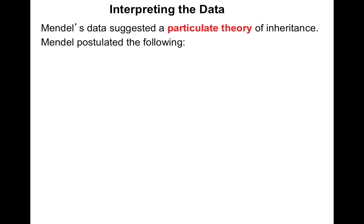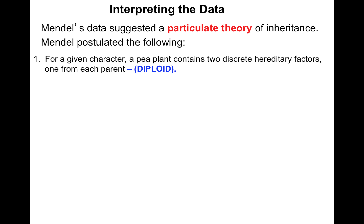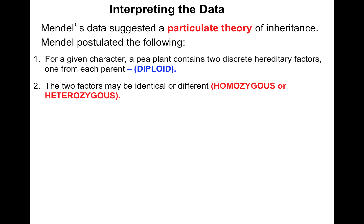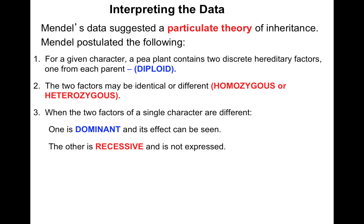Mendel's data suggested many things, and he was smart enough to figure it out. First, it suggested a particulate theory of inheritance — each trait was dictated by some type of information package. For a given character, a pea plant contains two discrete hereditary factors, one from each parent. In other words, Mendel figured out that individuals were diploid. The two factors can be identical or different — either homozygous or heterozygous. When the two factors of a single character are different, one is dominant and its effect can be seen, and the other is recessive and is not expressed.